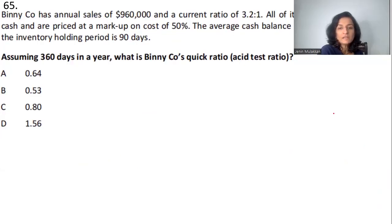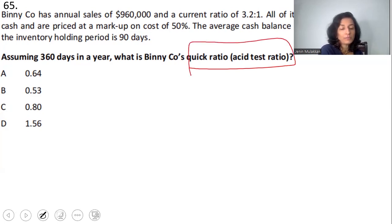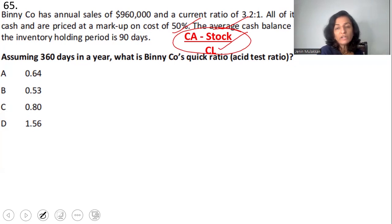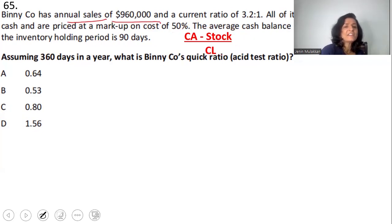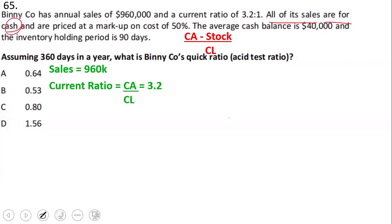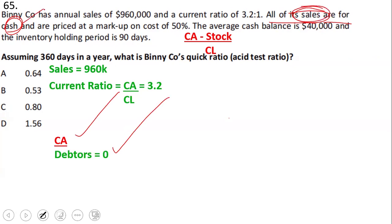Question 65 asks for the quick ratio (acid test ratio). The formula is (current assets − stock) ÷ current liabilities. Bindi Company has annual sales of $960,000 and a current ratio of 3.2:1, where current ratio = current assets ÷ current liabilities = 3.2. All sales are for cash, meaning debtors can be taken as zero because no credit sales are taking place.